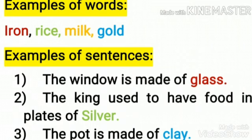Let's see some examples of sentences. First one: The window is made of glass. Second one: The king used to have food in plates of silver. Third one: The pot is made of clay. Here, 'glass,' 'silver,' and 'clay' — these words are called material nouns.